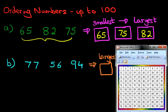So, I want you to find number 77. Then, find number 56. And lastly, find number 94.